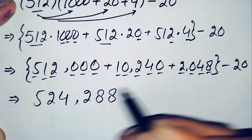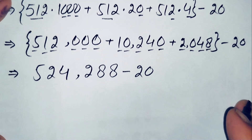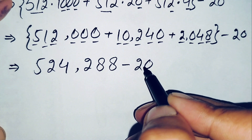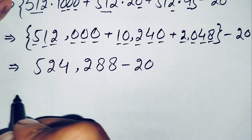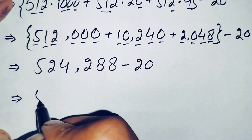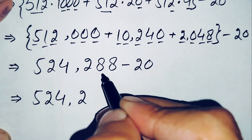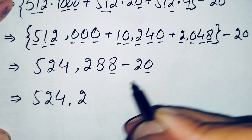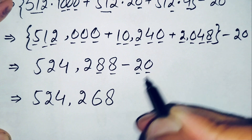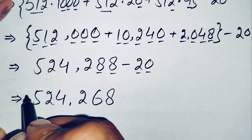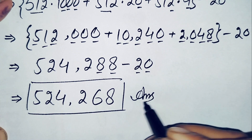So we have 524288 minus 20. We subtract 20 only from the last two digits: 8 minus 0 is 8 in the ones place, and 8 minus 2 is 6 in the tens place, so 88 minus 20 gives 68. Therefore the final answer is 524268.